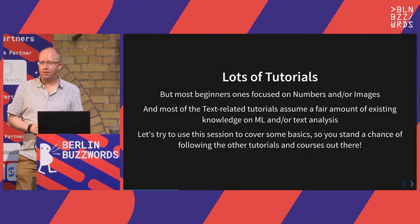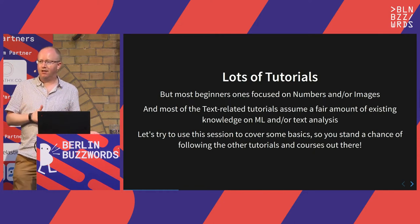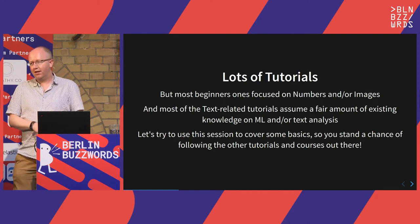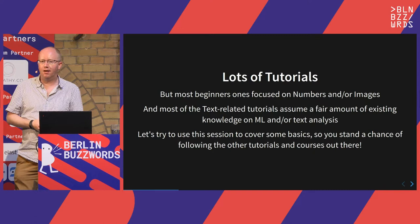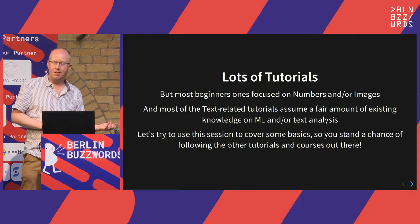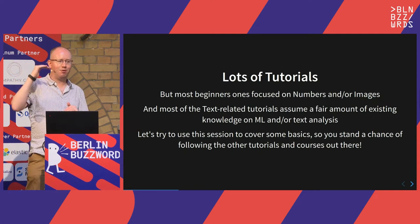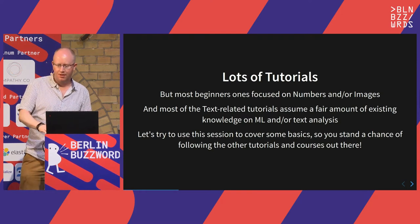There are huge numbers of tutorials out there on AI, ML, and text. One of the challenges we faced at Fleck when training new developers is that most text tutorials assume you're effectively a Lucene committer in terms of your knowledge of text search, or that you already know all the linear algebra to do all the ML stuff. There are quite a lot of good tutorials for image recognition and regression analysis, but for text the level they start at is pretty high. I'm hoping today I can give you a little kickstart.